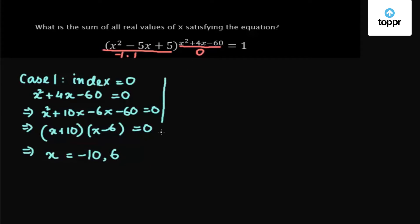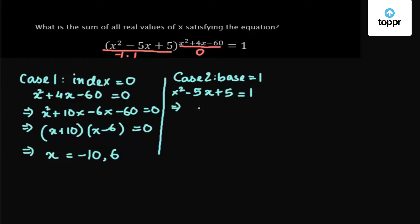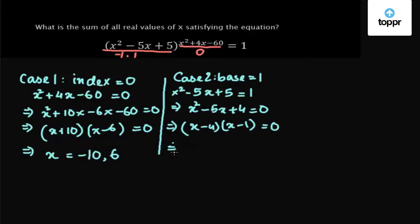Case 2: when the base equals 1, we have x² - 5x + 5 = 1, which implies x² - 5x + 4 = 0. Factorizing, we get (x - 4)(x - 1) = 0, which gives x = 4 and x = 1.